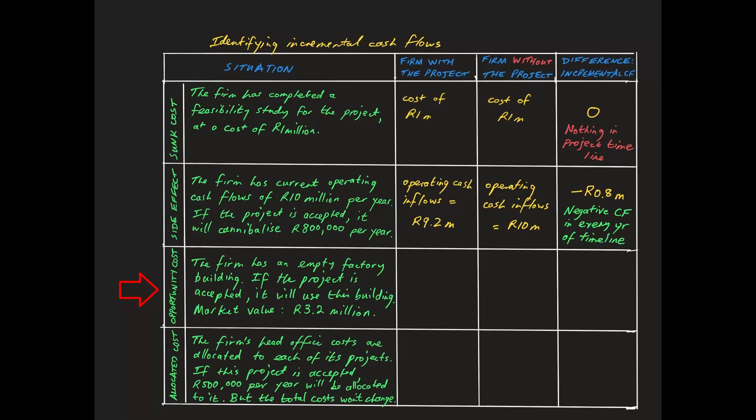Next, we have an empty factory building which the project can use if it is accepted. By now, I am sure you can see where this is headed. The wrong answer is to say the project gets a building for free so there is no cash flow inside the project box and no cost at T0 in the timeline. The right approach is to agree with the zero cost if the project is accepted, but to recognize that this is only half the answer, because without the project the company could have sold the building for 3.2 million.